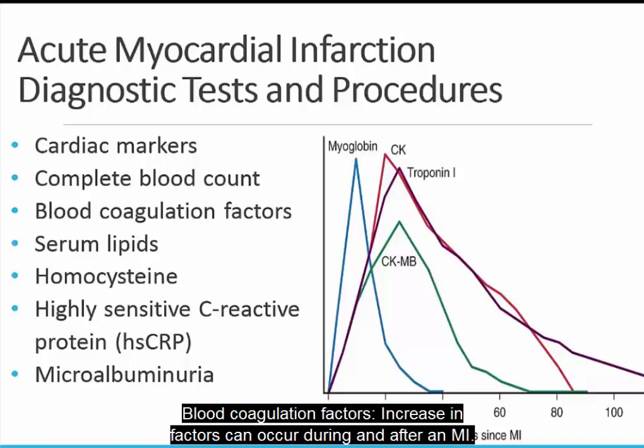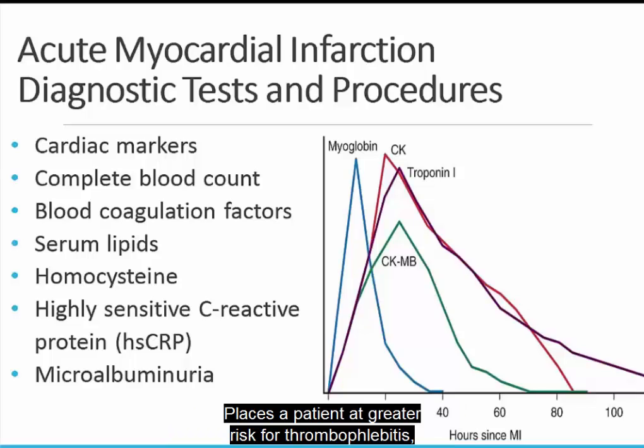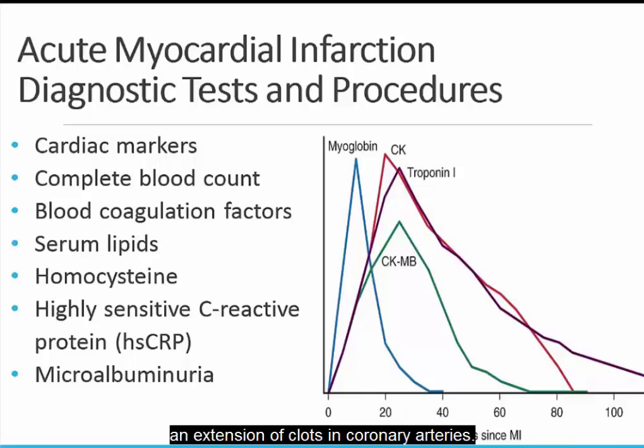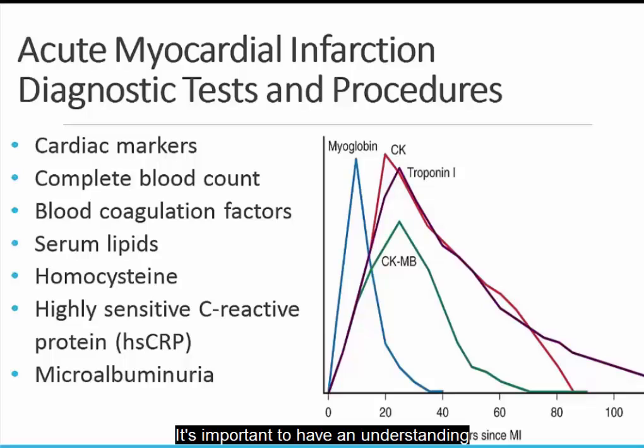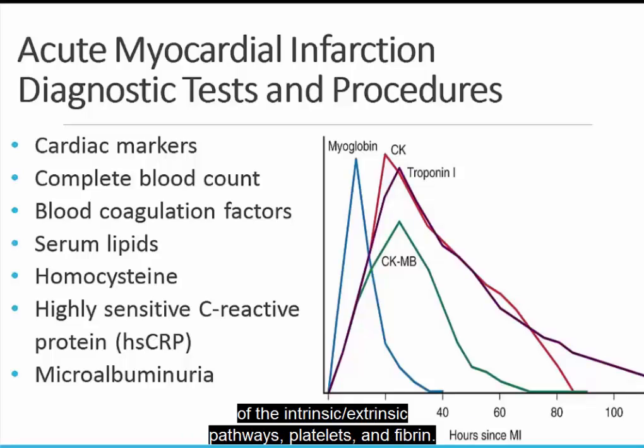Blood coagulation factors. An increase in factors can occur during and after an MI, placing a patient at greater risk for thrombophlebitis and extension of clots in coronary arteries. It is important to have an understanding of the intrinsic and extrinsic pathways, platelets, and fibrin.